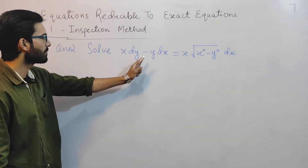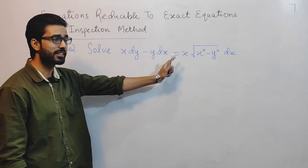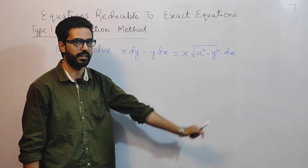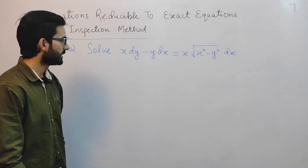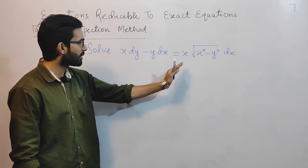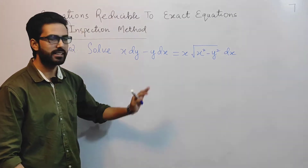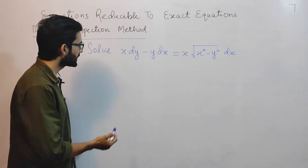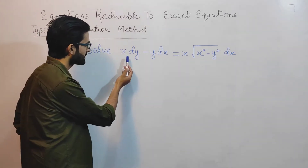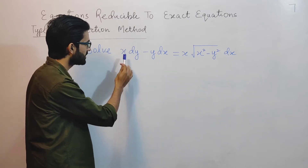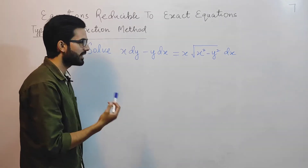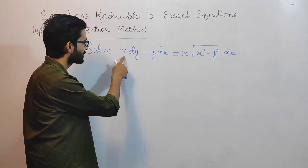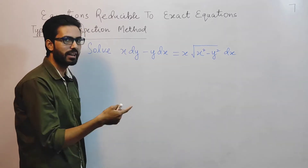Solve: x dy minus y dx is equal to x times the square root of (x² minus y²) dx. Now if we talk about this differential equation, this is non-exact. And you know that x dy minus y dx — I will not integrate this directly, because this is non-integrable.